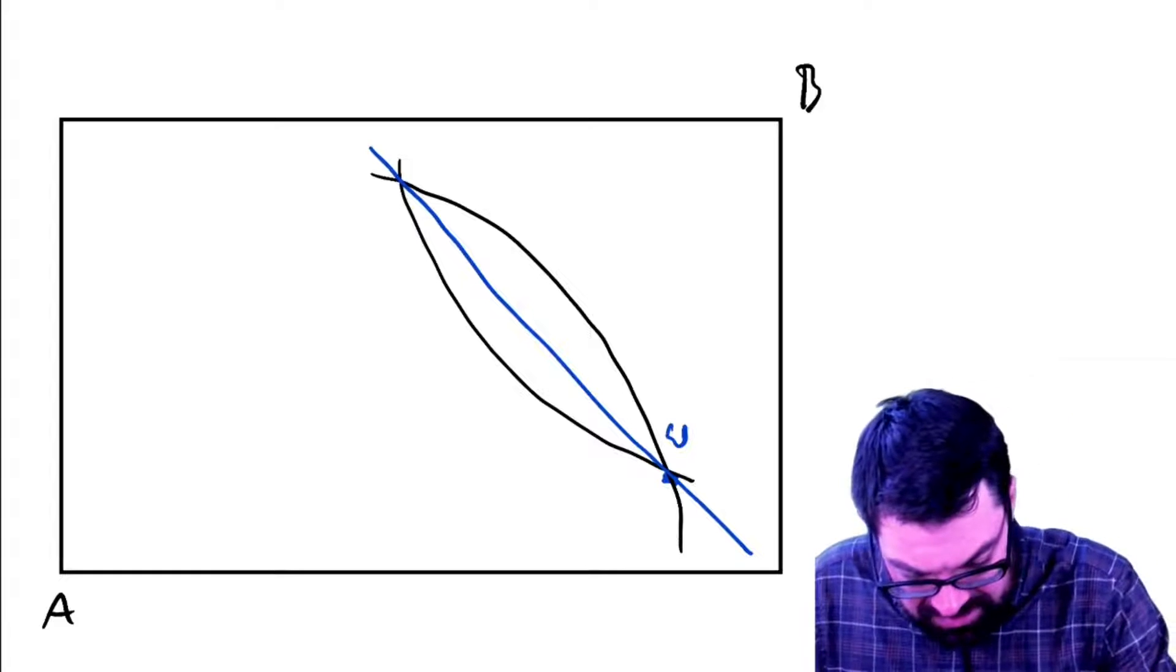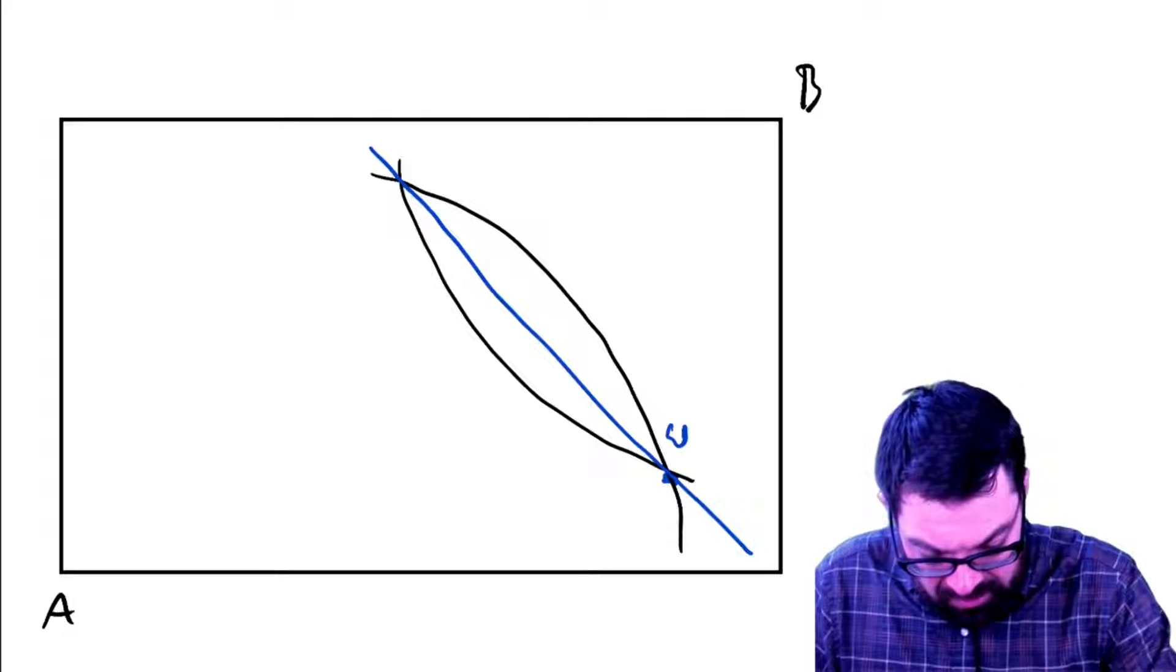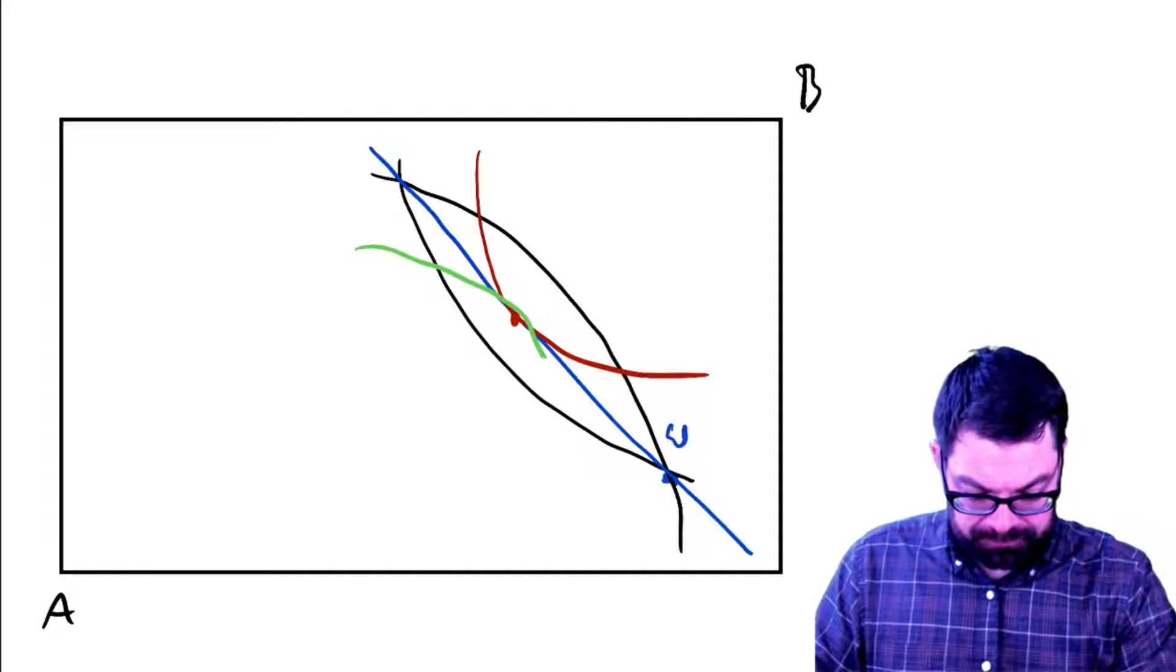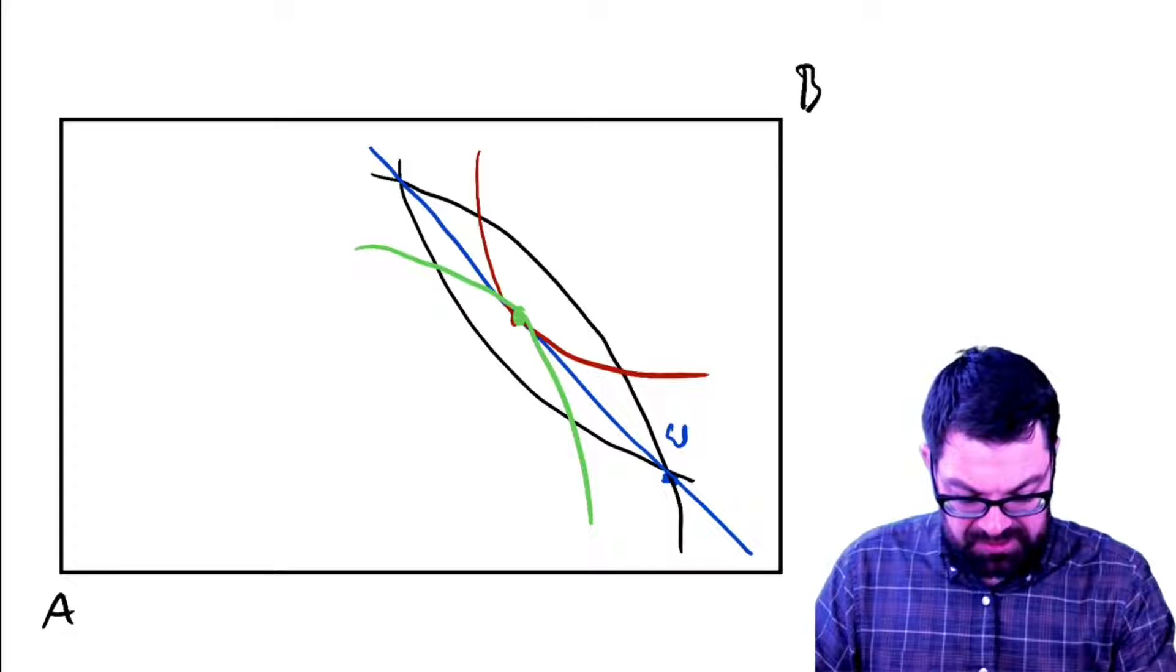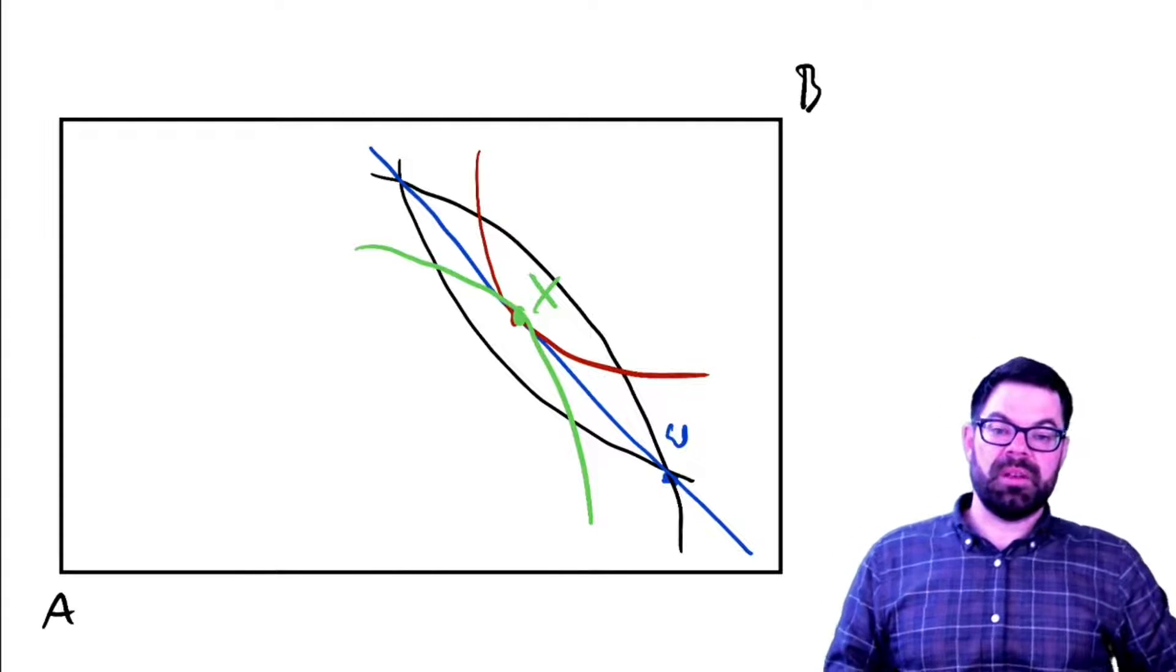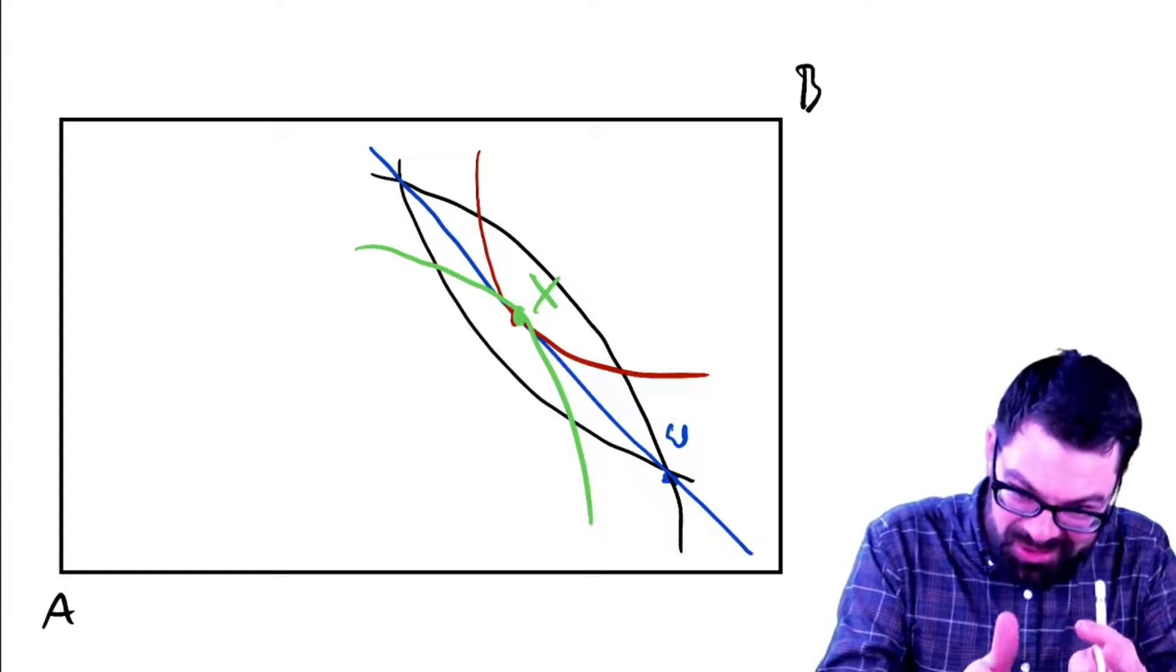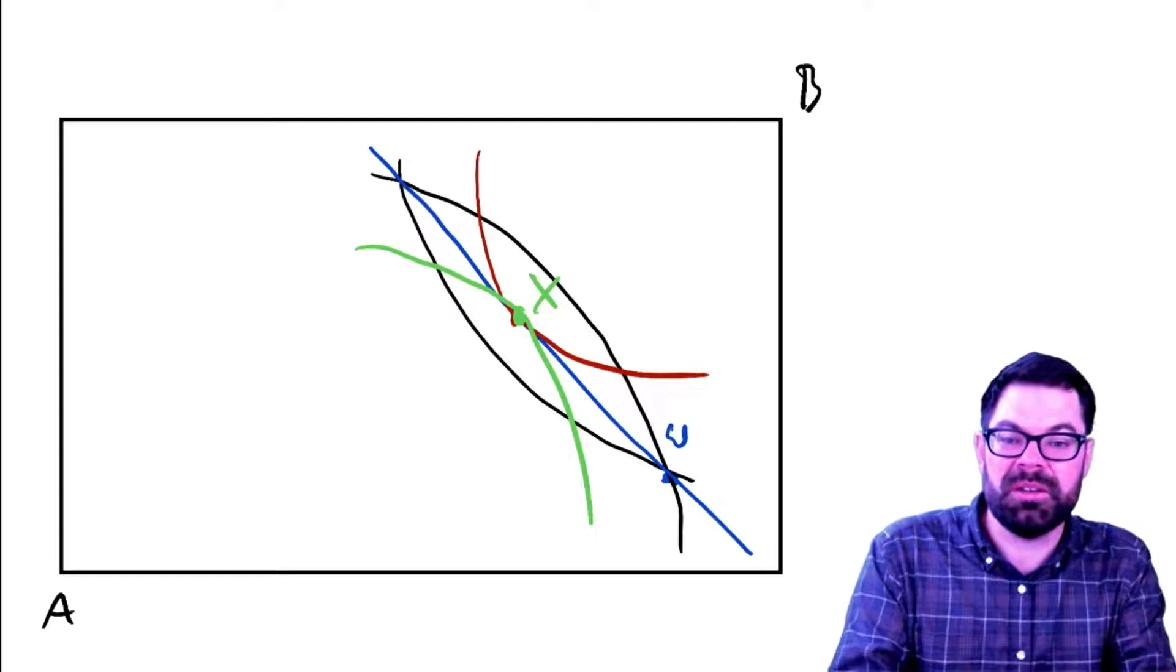And then, let's say we have an equilibrium point whereby we have indifference curves that are tangential to one another. And so we have then a consumption point x, which is this. So if we have that, so at that point, and assume here, I didn't draw this very well, but assume here that those two indifference curves are tangential to one another.